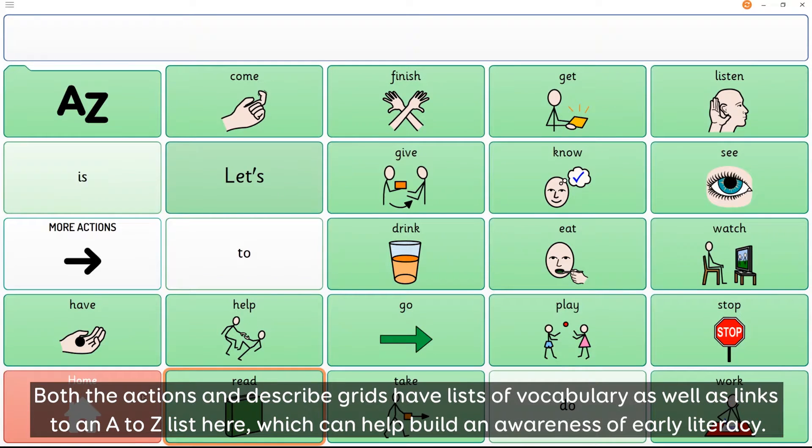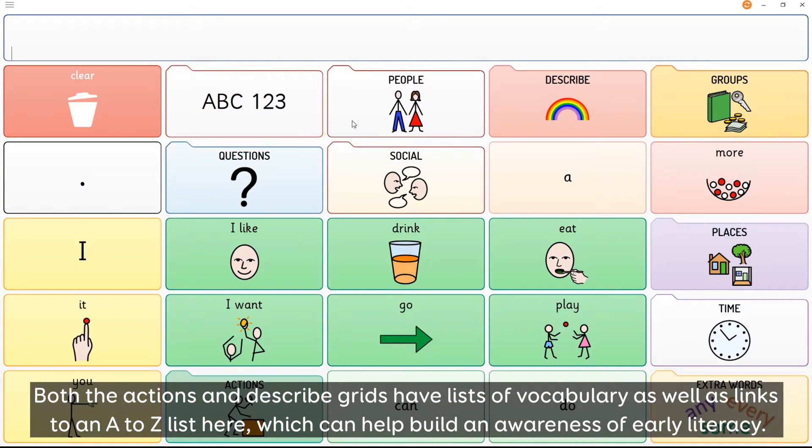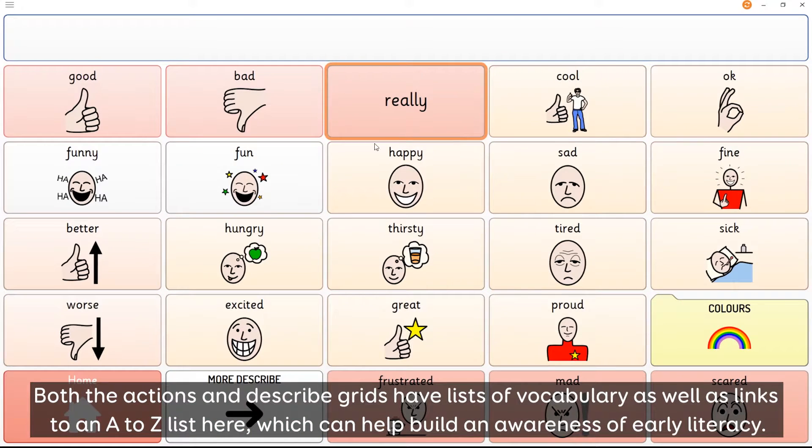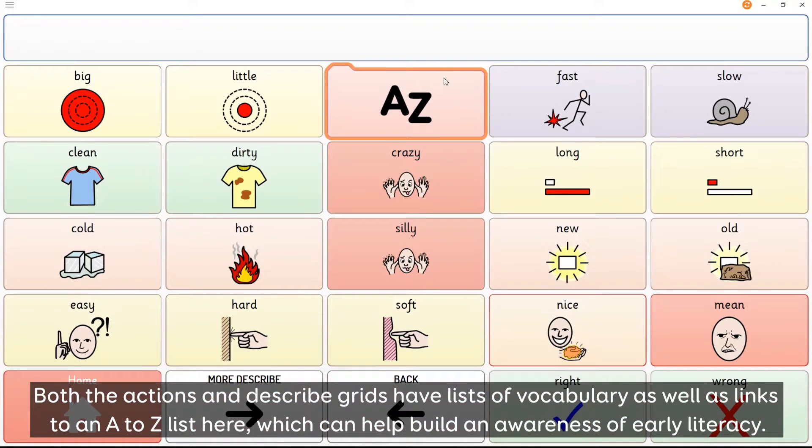Both the actions and describe grids have lists of vocabulary as well as links to an A to Z list here which can help build an awareness of early literacy.